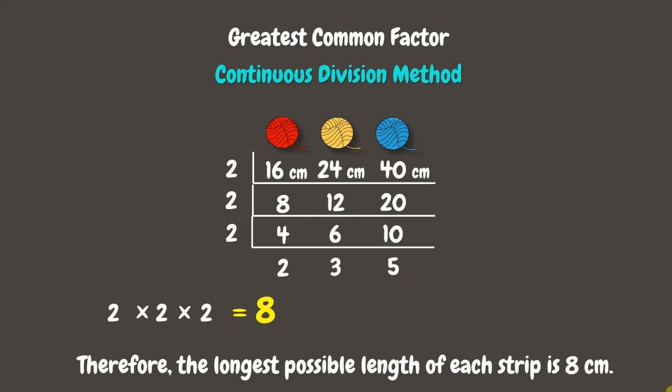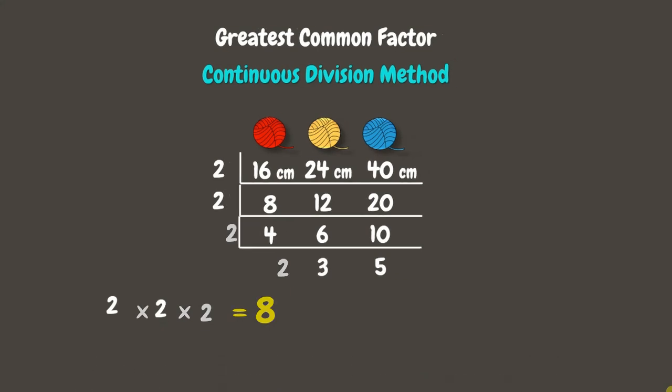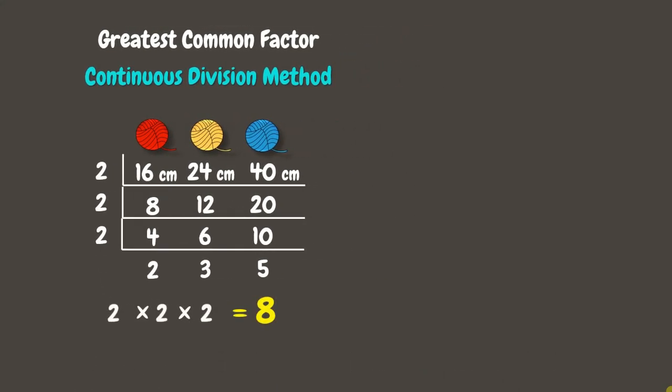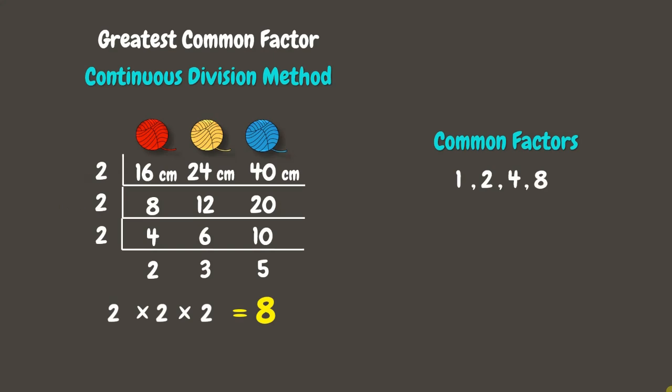Therefore, the longest possible length of each strip is 8 centimeters. To get their common factors, let us start with 1, which is a factor of all numbers. Next, let's include the common prime factor, which is 2. Then, let us multiply the common prime factors: 2 times 2 is 4, and 2 times 2 times 2 is 8. The greatest common factor is 8. Great job! Let us try another one.